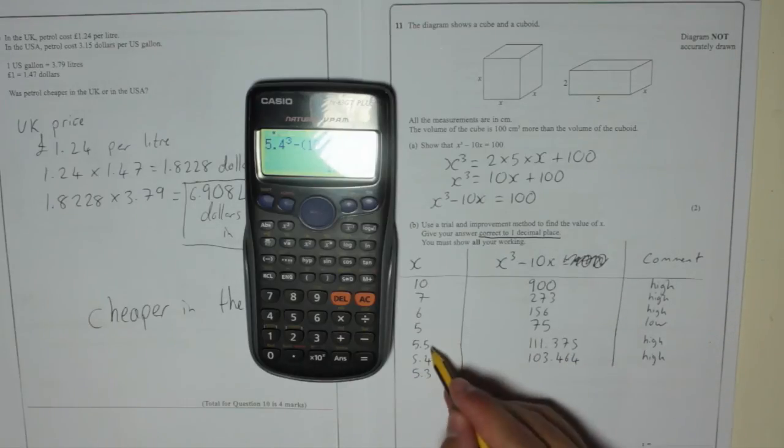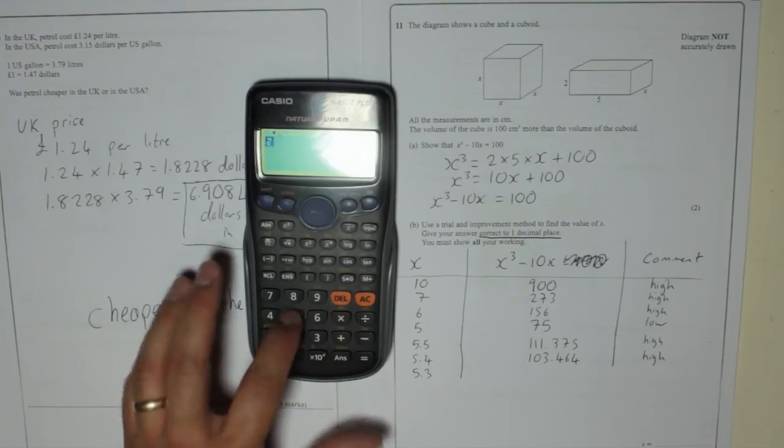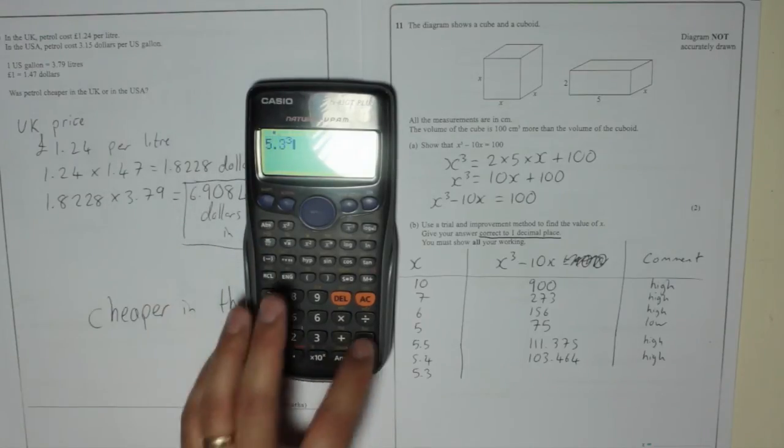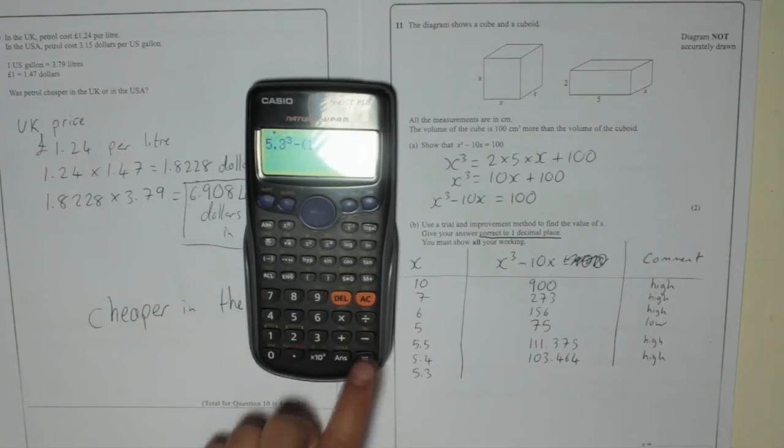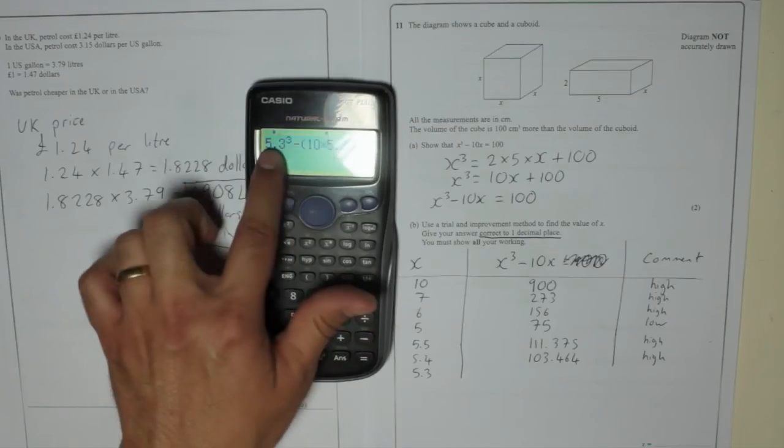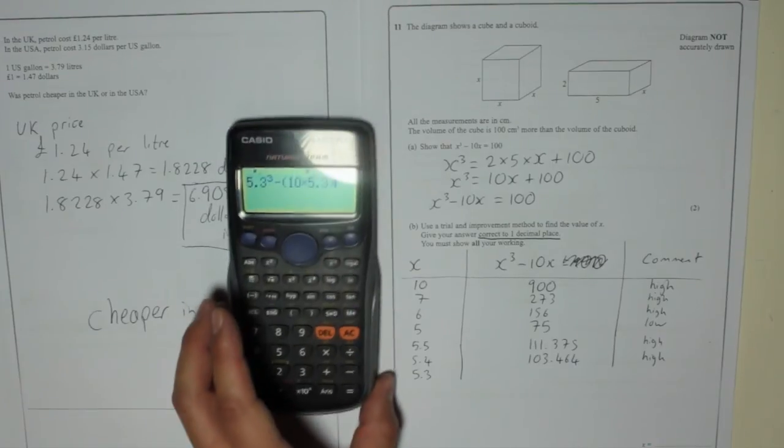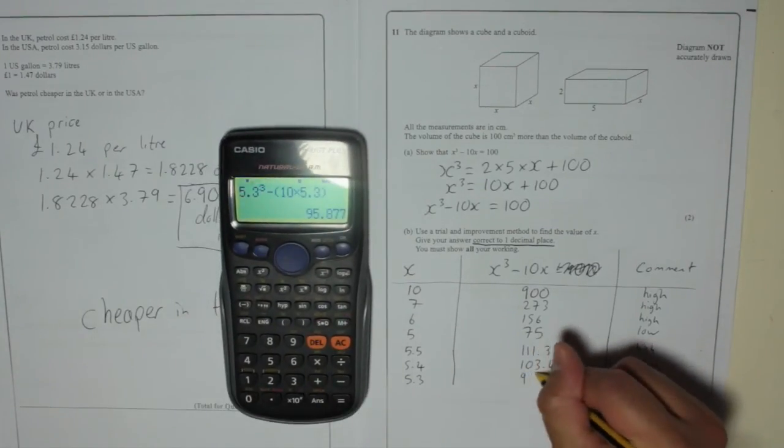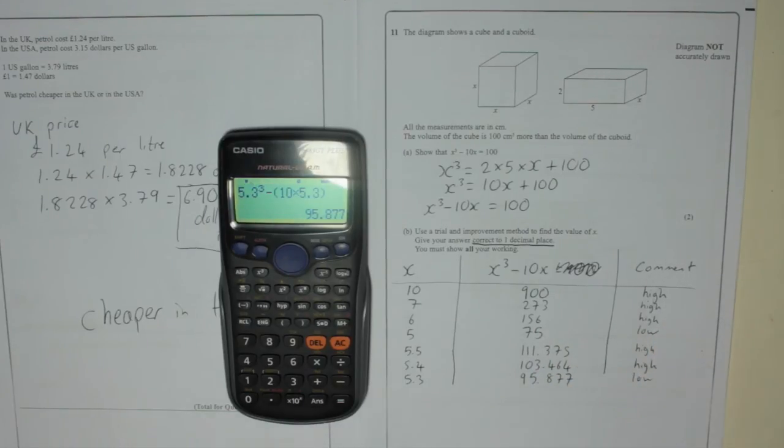So I tried 5.4. Now I'm trying 5.3 and I'm pretty sure this one's going to be too low. 5.3 cubed minus 10 times 5.3. That's the bracket. And always make sure you're using the right number. 5.3, 5.3. Sometimes you might accidentally forget and use the last one you did. So that gives us 95.877. Which is too low.